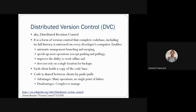The distributed system does not rely on a single location. If one developer's code base has been deleted or corrupted, the code base would still be available with other developers. It does not depend on a single point of failure, as there are multiple replications of the code available.